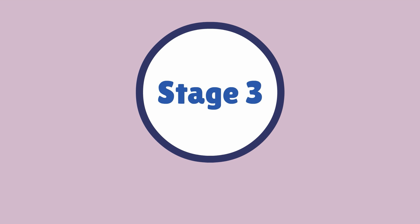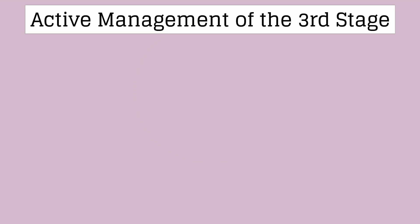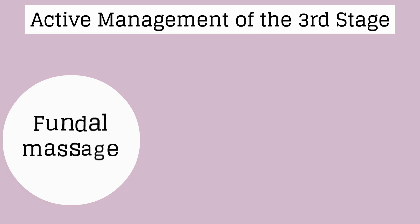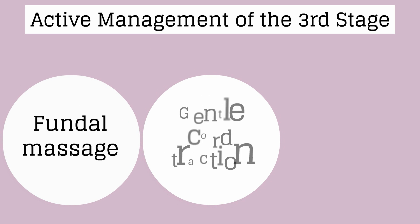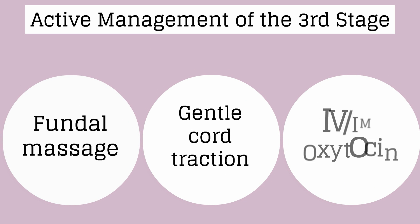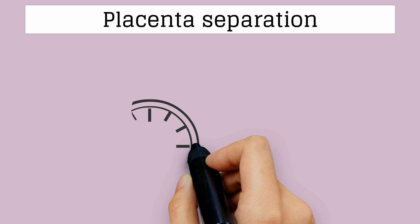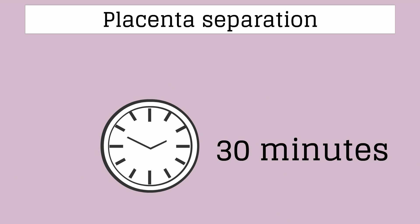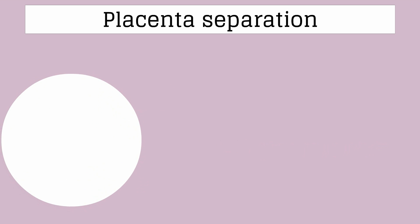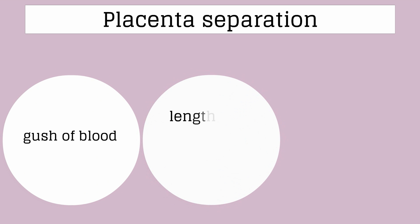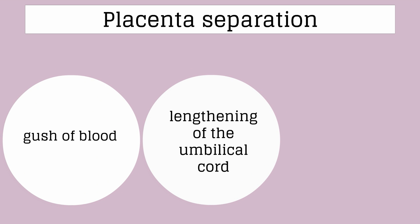Active management of the third stage of labor decreases the risk of postpartum hemorrhage. This involves fundal massage, gentle cord traction, and administration of IV or IM oxytocin. The placenta can take up to 30 minutes to deliver. Two classic signs that the placenta is separating are a gush of blood and lengthening of the umbilical cord. After the placenta delivers, the uterus should be palpated to confirm it is firm and contracted, and the placenta should be visually examined to confirm complete removal.